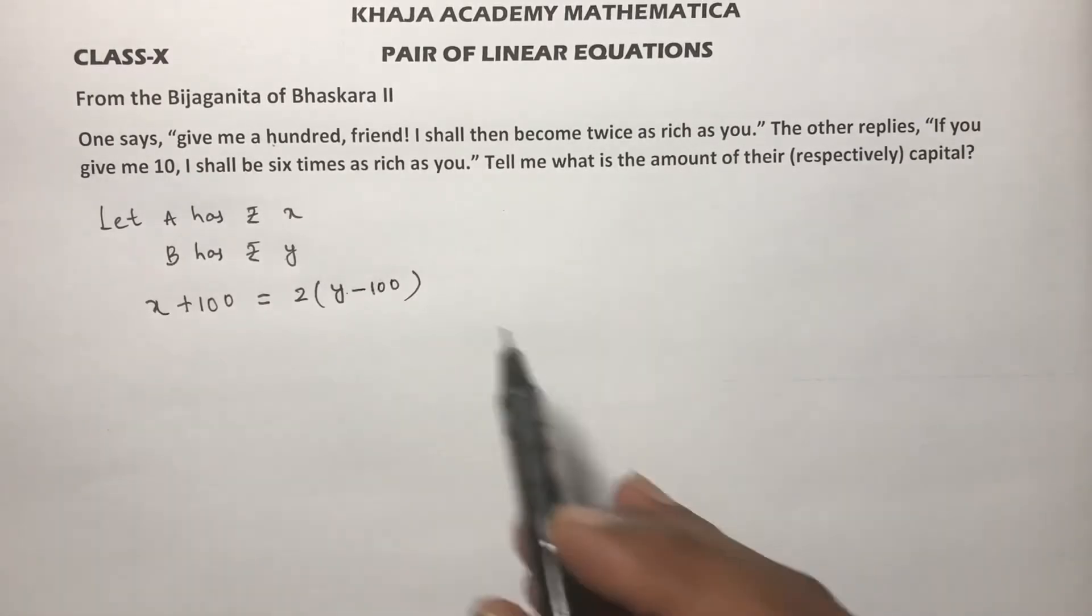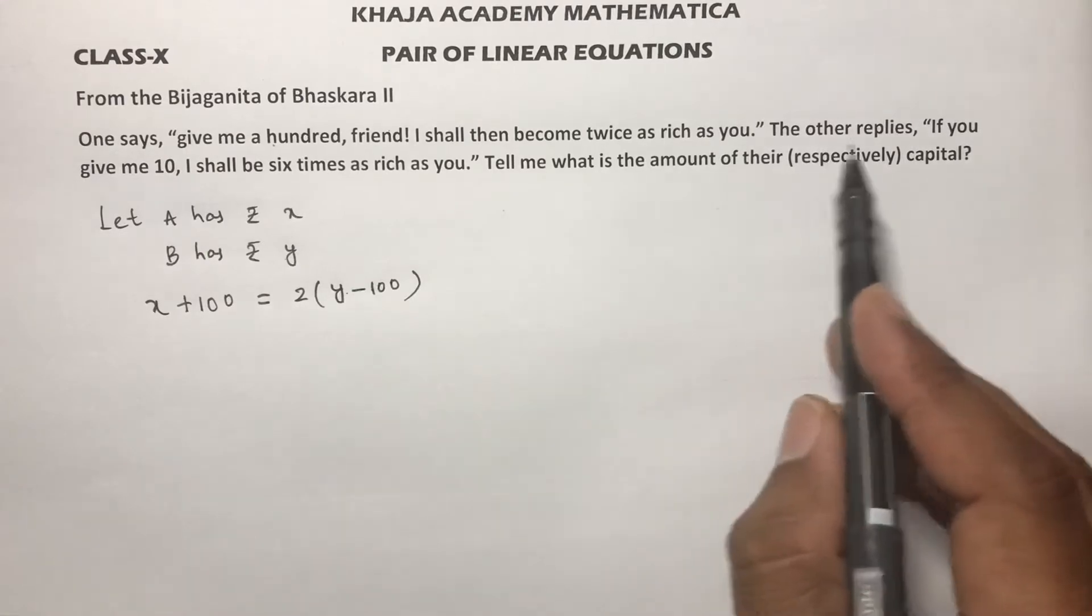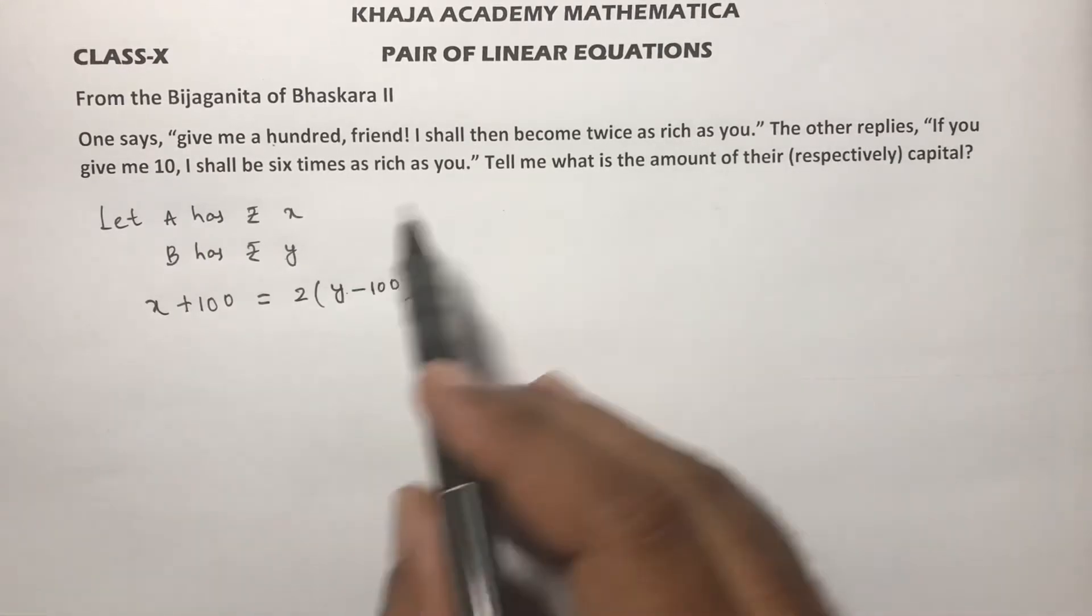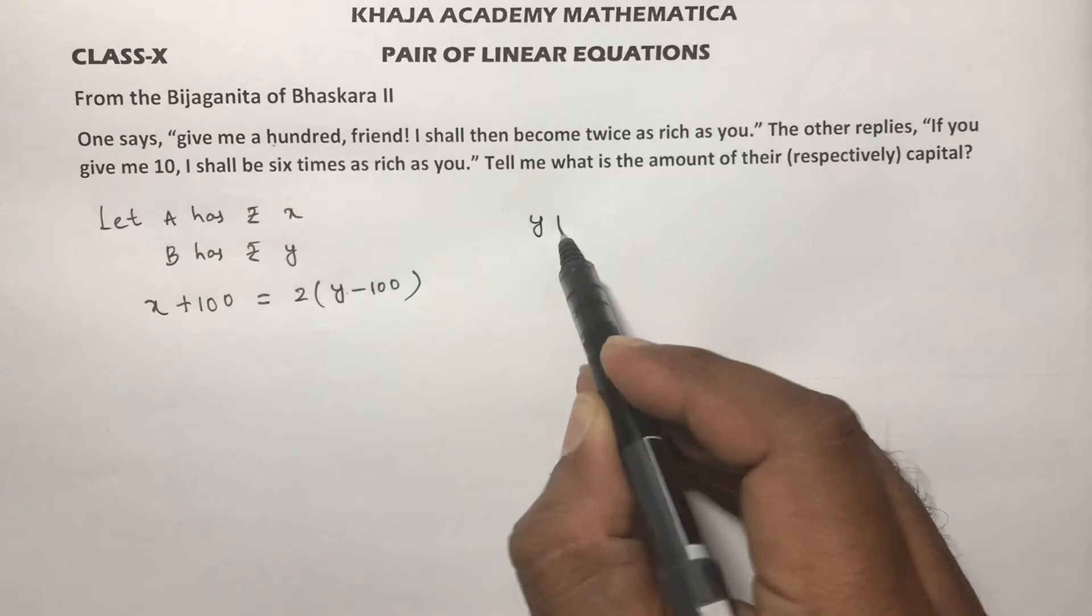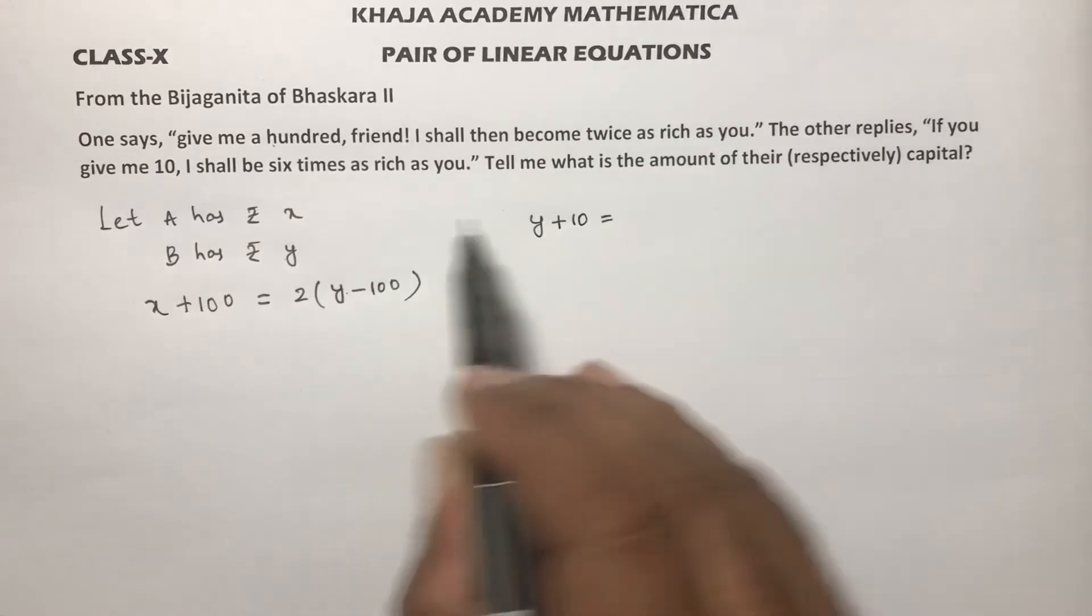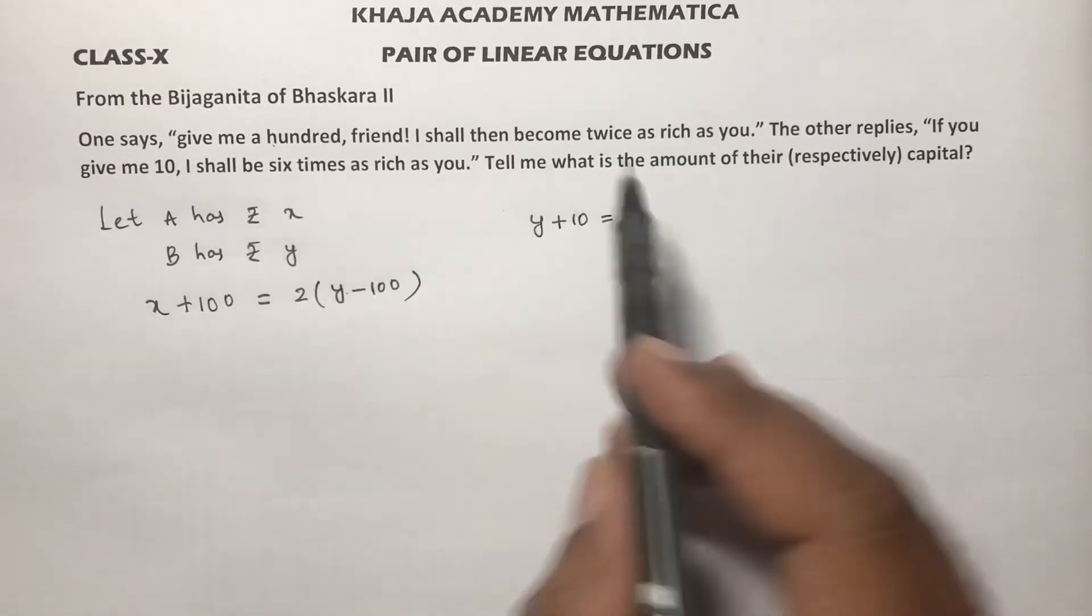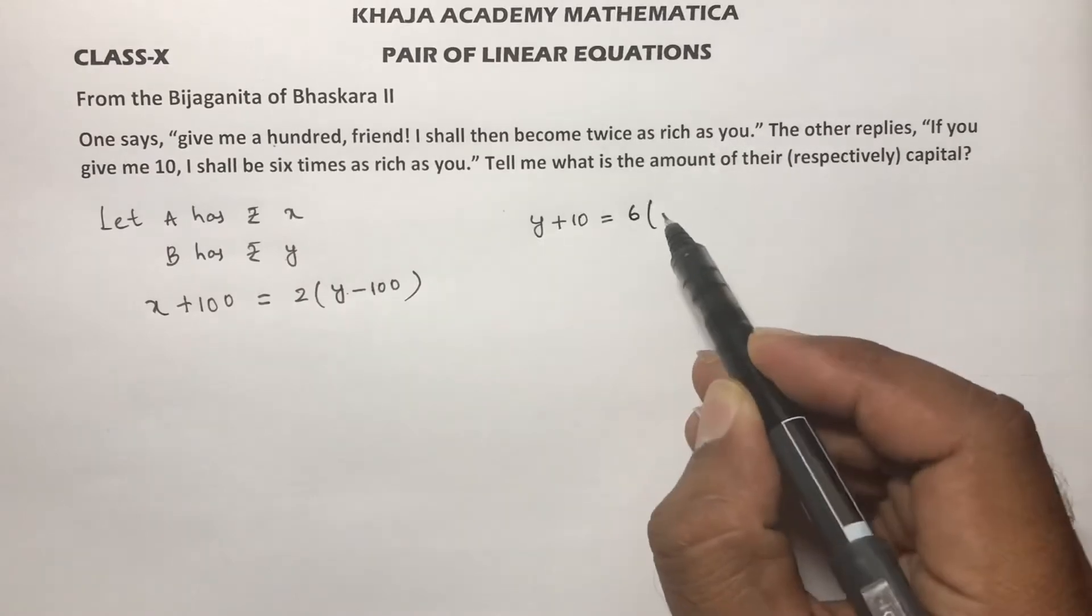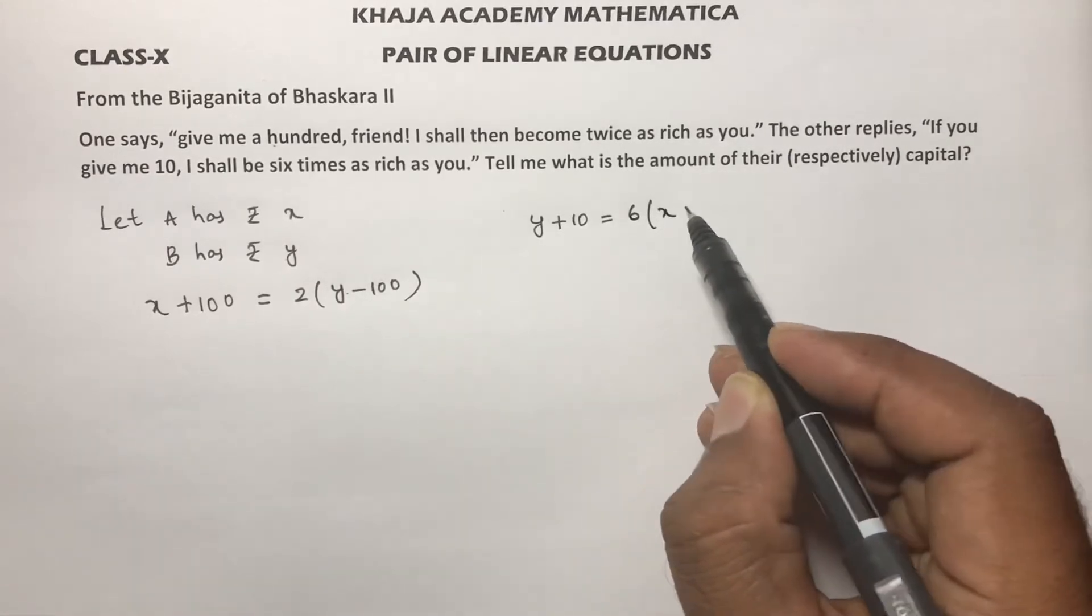Next B replies, the other means if you give me 10, now suppose if B will get 10, then I shall be six times as rich as you.